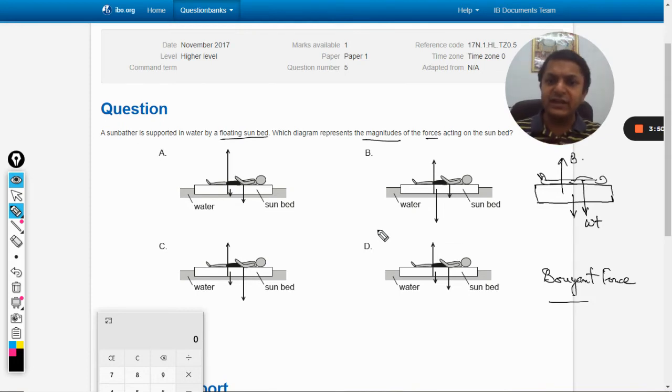When we analyze all these options we find that there are three forces shown everywhere in all the diagrams. So what is the difference? Well, the difference is the length, the magnitude that is being shown here. The length of the vector is basically representing the magnitude.